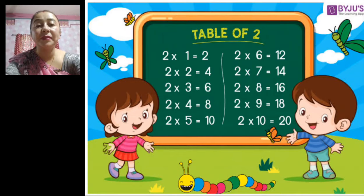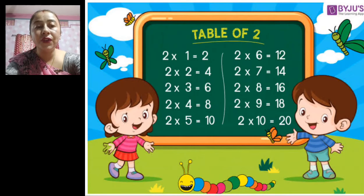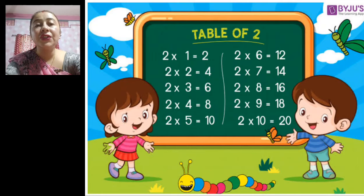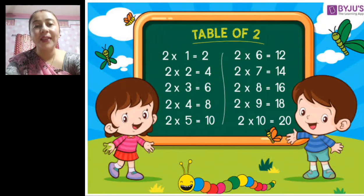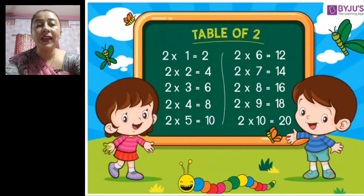First we will learn the table of two. Two one's are two, two two's are four, two three's are six, two four's are eight, two five's are ten, two six's are twelve, two seven's are fourteen, two eight's are sixteen, two nine's are eighteen, two ten's are twenty.